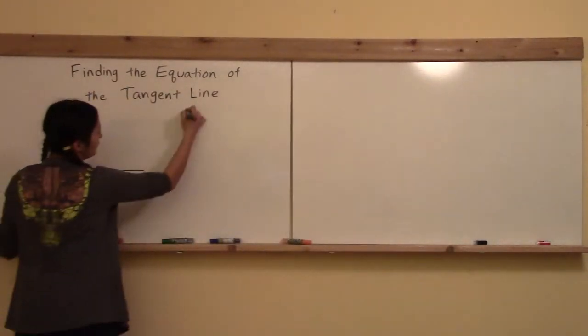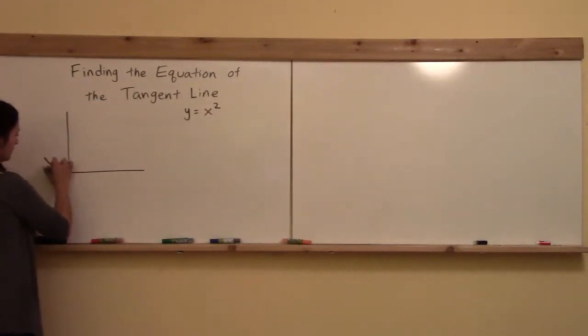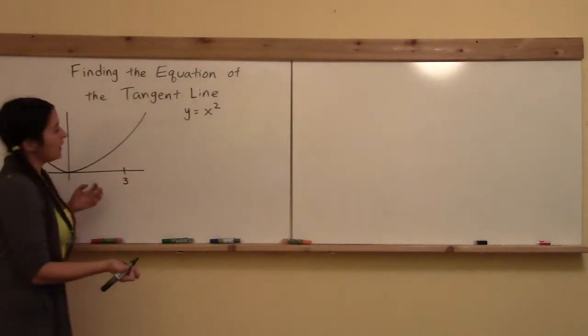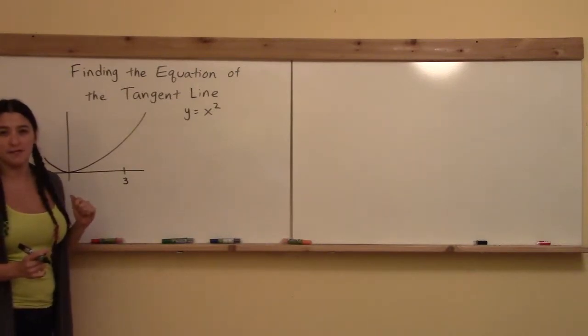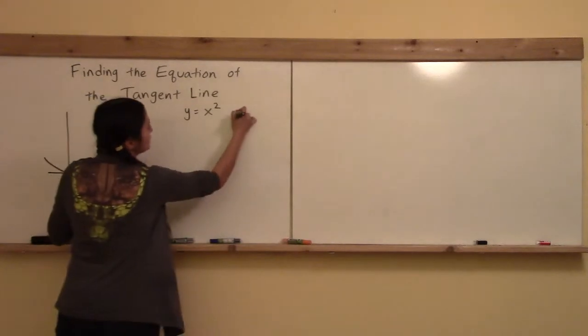Let's say we have some function here, maybe the function y is equal to x squared, which looks like this. And let's say we have some point of interest, like x equals 3, and the question is that you may see: find the equation of the tangent line to the function at the point x is equal to 3.